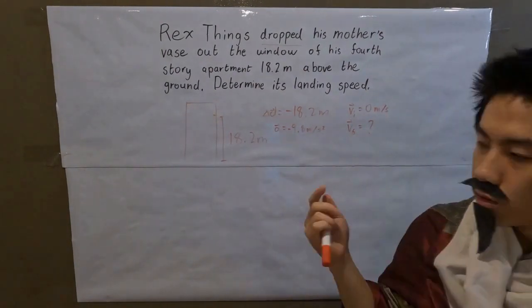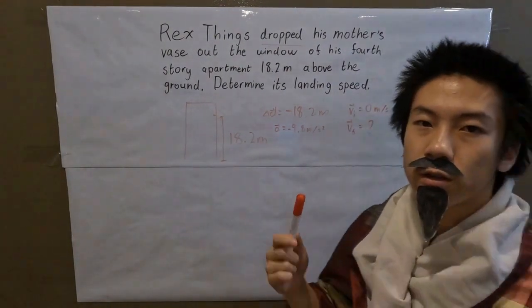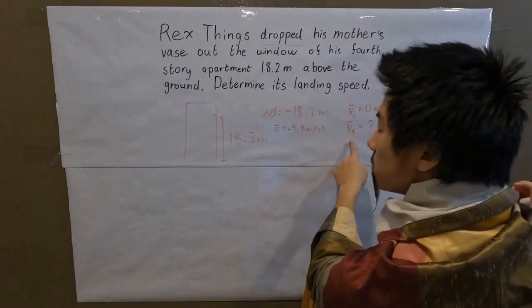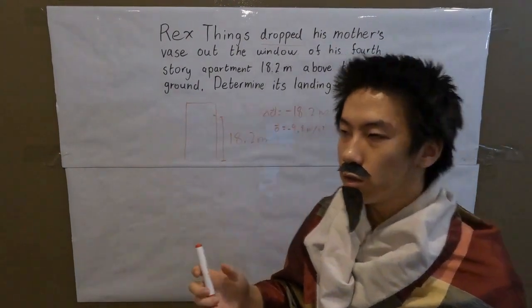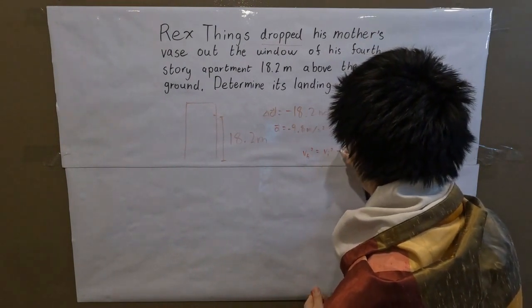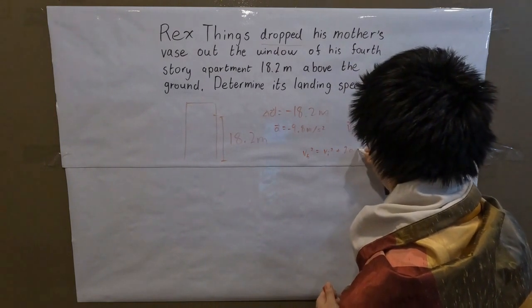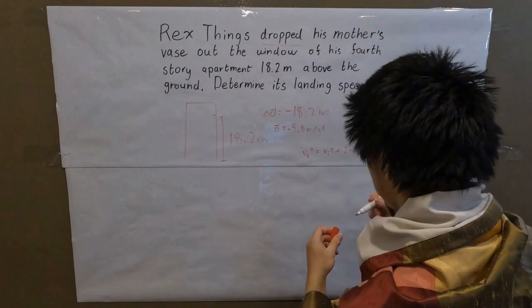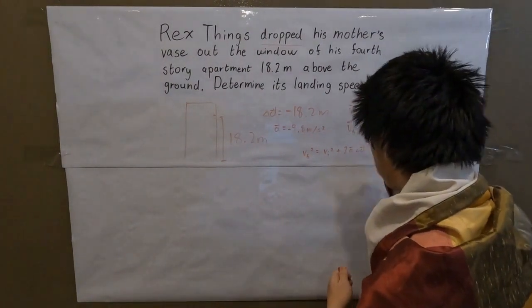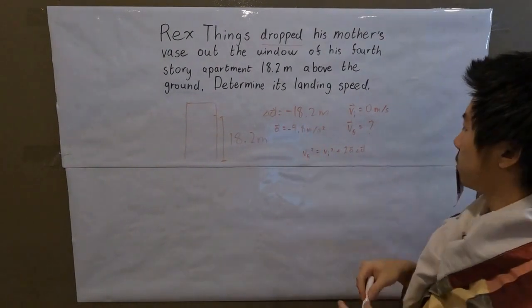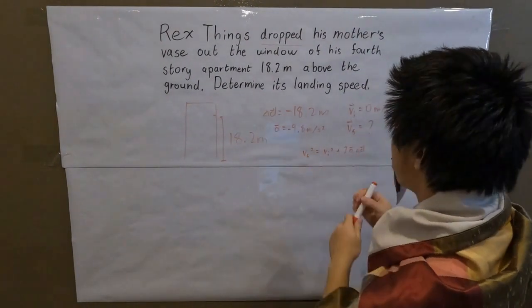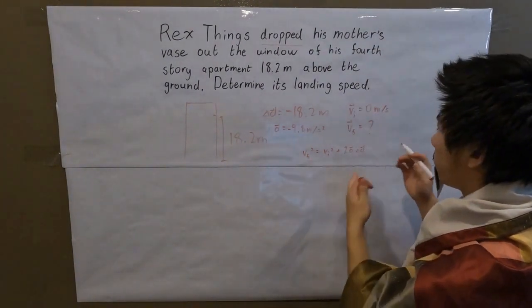So how do we do this? We need to find the correct formula. We have displacement, initial velocity, and acceleration, and we want to find final velocity. The equation that perfectly fits this situation is: Vf squared equals Vi squared plus 2a times change in position. This equation contains final velocity, initial velocity, acceleration, and displacement — exactly what we have.